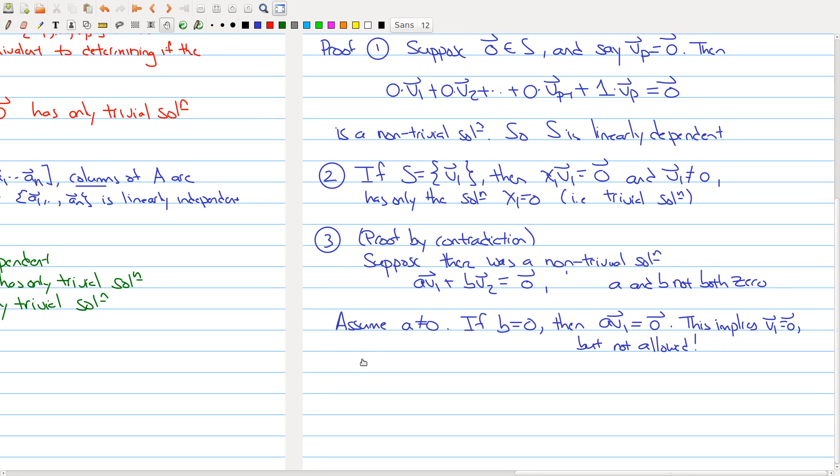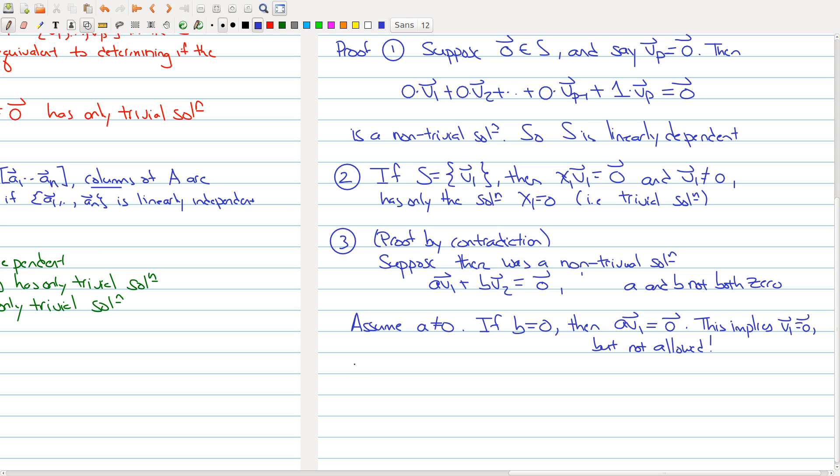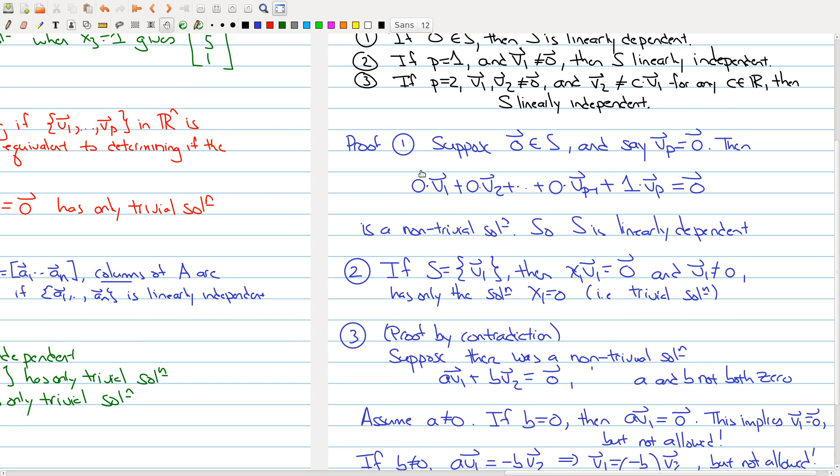What happens if B does not equal to zero? Then we have that A V₁ is equal to minus B V₂, so I'm just taking this equation and rearranging it. This tells me that V₁ is equal to minus B/A times the vector V₂. But this is not allowed, because we said one of the other conditions about my vectors V₁ and V₂ is that one was not a scalar multiple of the other.